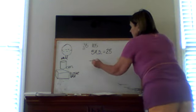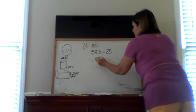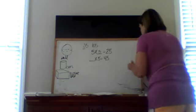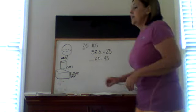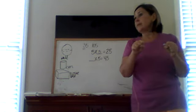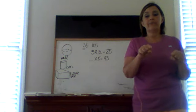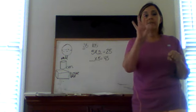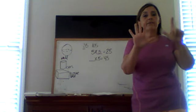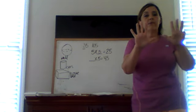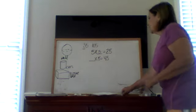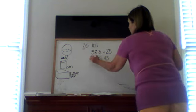I have another one with a missing factor. I want to know how many 5s are in 45. Again, if I don't know it in my head, I can use my fingers and count by 5s until I say 45. 5, 10, 15, 20, 25, 30, 35, 40, 45. And how many fingers are up? 9. So 9 times 5 makes 45.